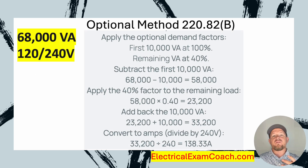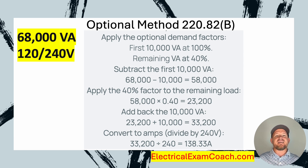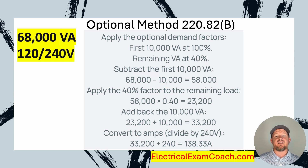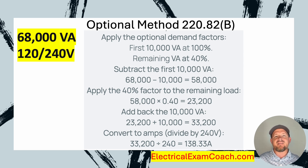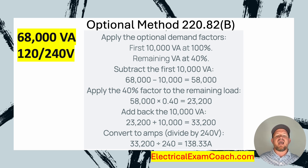When applying the optional method demand factors, it works like this: I take the first 10,000 VAs at 100% and the remaining at 40%. So first I subtract my 10,000 — I take 68,000 minus 10,000, which gives me a remainder of 58,000. Then I apply the 40% demand factor to the remainder: 58,000 multiplied by 0.40 gives me a new reduced load of 23,200.